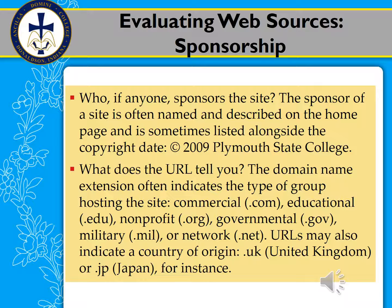The domain name in the URL can tell you things. A commercial site — primarily a business — is .com. An educational website is .edu, whose primary reason for putting things out is to educate people, not to sell. A nonprofit organization is .org. Governmental is .gov. Military is .mil. A network is .net, which you're seeing more for commercial websites too. Sometimes the URL will give a country of origin, like .uk for the United Kingdom, .jp for Japan, or .ca for Canada.